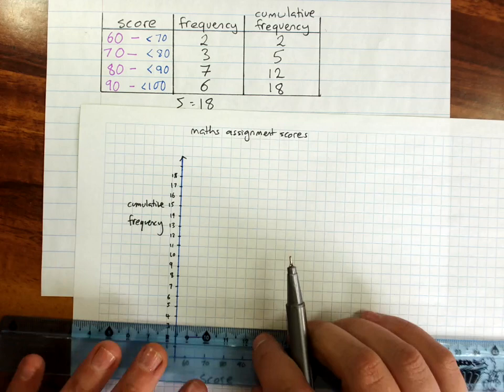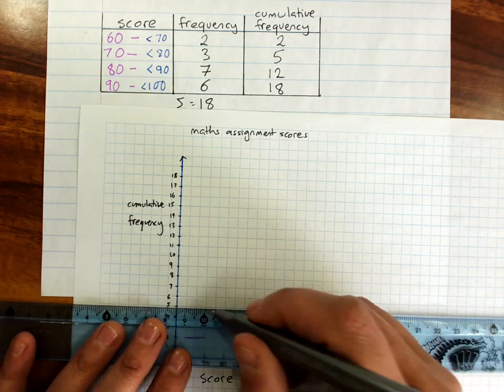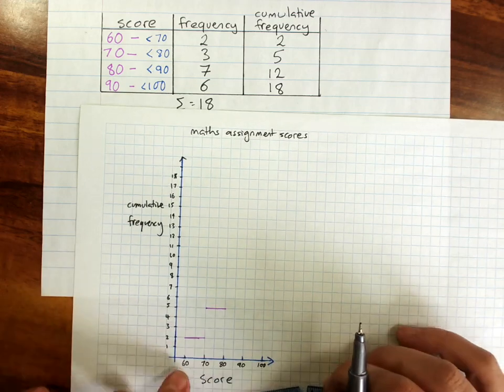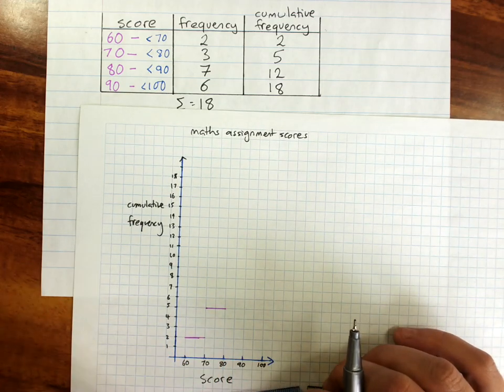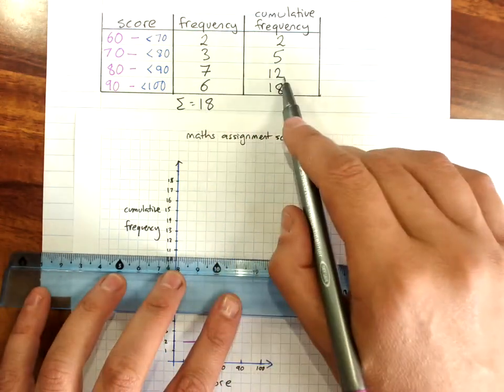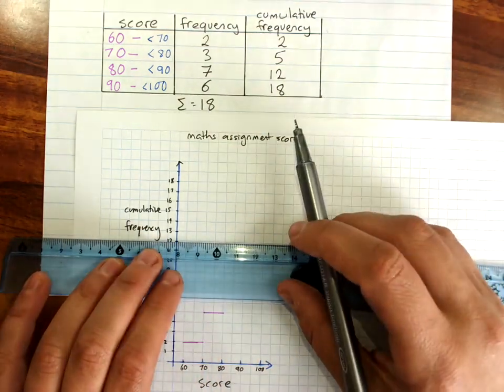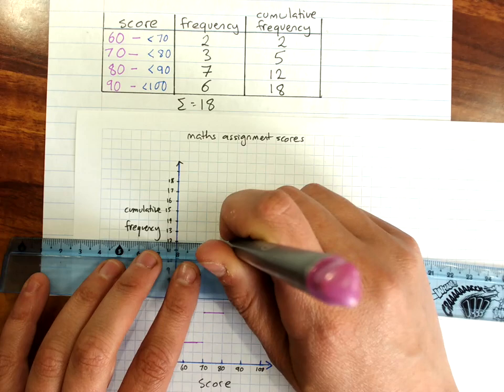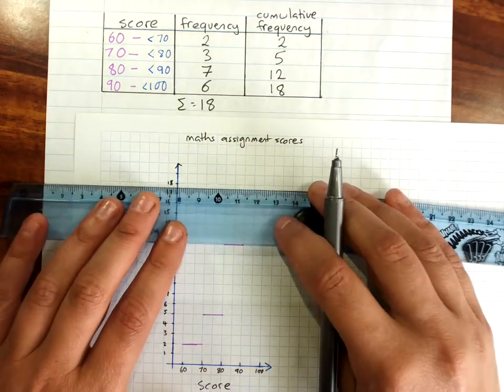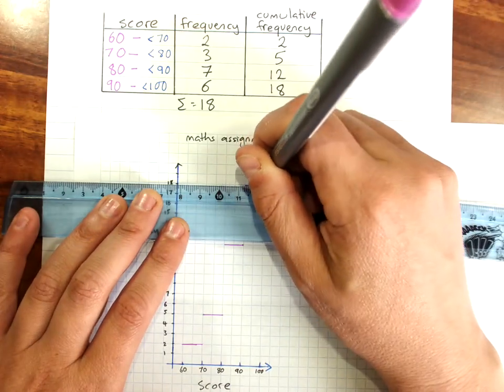For 70 to 80, 5. 60 to 70 was 2. 70 to 80 was 5. 80 to 90 is 12. 90 to 100 is up at our total of 18.